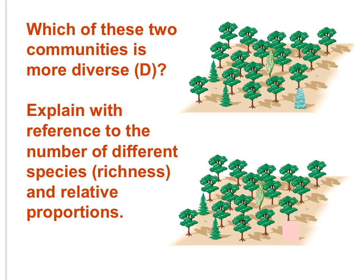Examine the upper image and the lower image carefully — consider which community is more diverse and why. Explain your thinking with reference to the number of different species, or species richness. The upper image has four different species, while the lower image has only three. Thus, the upper location would be considered more diverse; it would have a higher species richness.